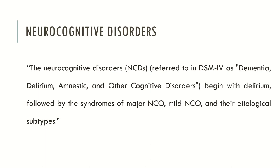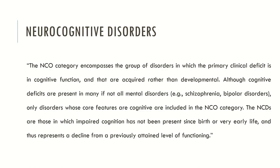Now let's look at the neurocognitive disorders according to the DSM-5. Neurocognitive disorders, previously known as dementia, begin with delirium followed by the syndromes of major neurocognitive disorder and mild neurocognitive disorder. The neurocognitive category encompasses a group of disorders in which the primary clinical deficit is in cognitive function and that are acquired rather than developmental — individuals acquire this type of disorder. Although cognitive deficits are present in many mental disorders, only disorders whose core features are cognitive are included in the neurocognitive category. These are disorders in which impaired cognition has not been present since birth or early life and thus represents a decline from a previously attained level of functioning.